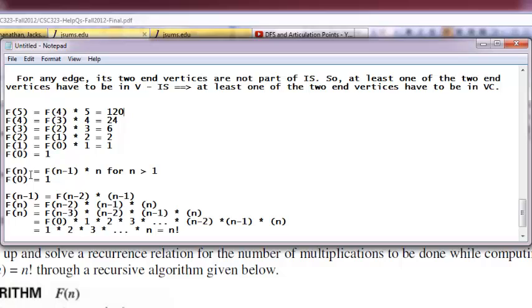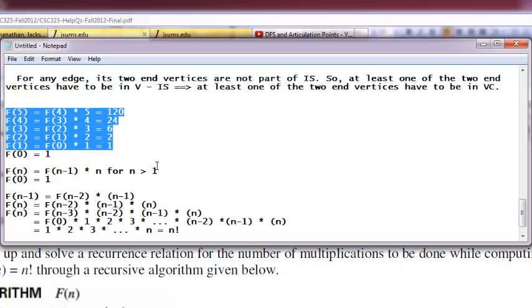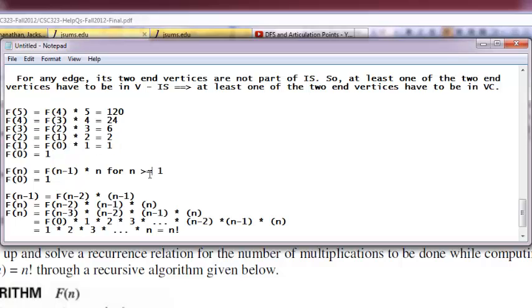So I can write a general recurrence like this: f(n) equals f(n-1) times n for n greater than 1. Basically we can write like this for any n greater than or equal to 1.